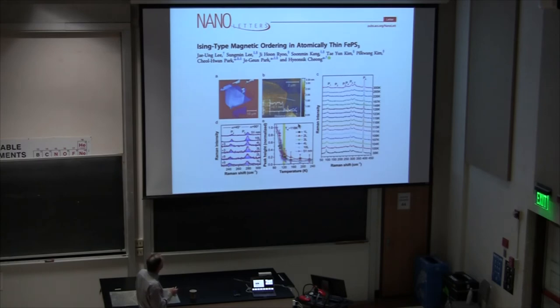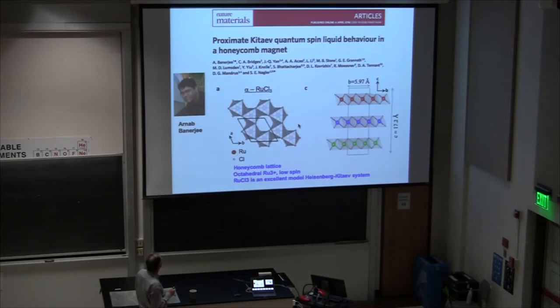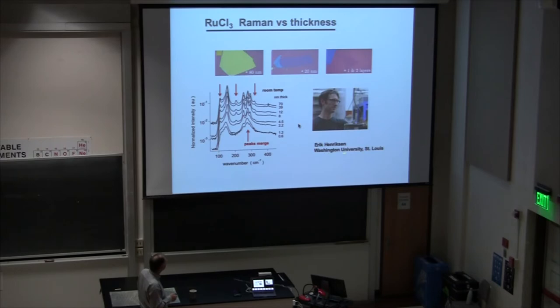Other systems that are quite interesting are these, similar to the chromium silicon tellurium-3. In this case, this iron phosphorus sulfur-3, FePS3. This one is air-stable. The big problem with working with these is a lot of them are not very stable in air. This one happens to be antiferromagnetic. There's a big effort out of South Korea on these systems. Here's a Kitaev material, ruthenium trichloride. This is also a cleavable material. We've collaborated with Eric Hendrickson at Washington University, St. Louis. Eric has shown that you can cleave these down to single layers, and they're actually fairly air-stable, believe it or not, which surprised me.